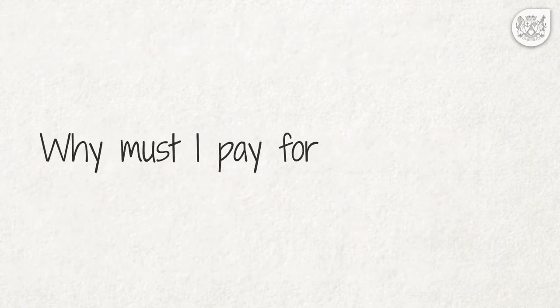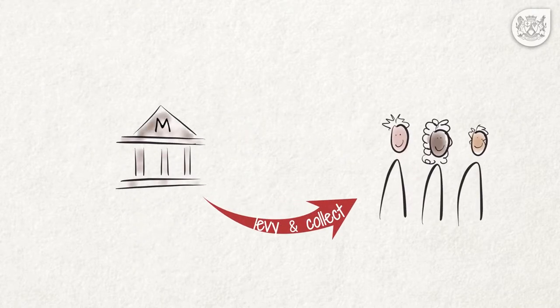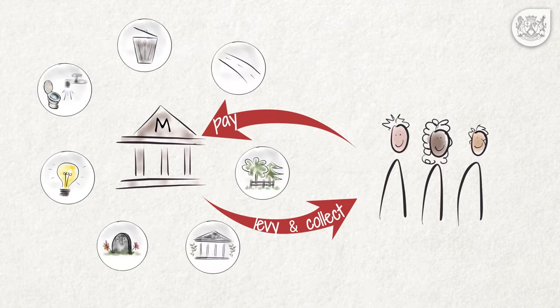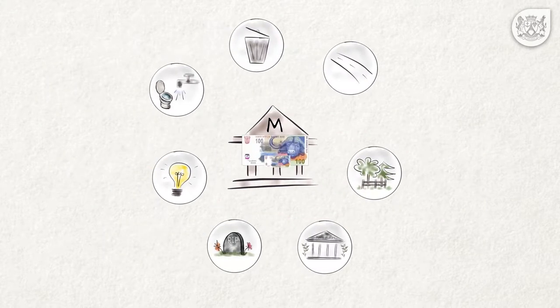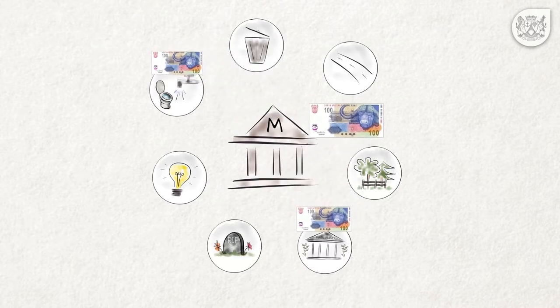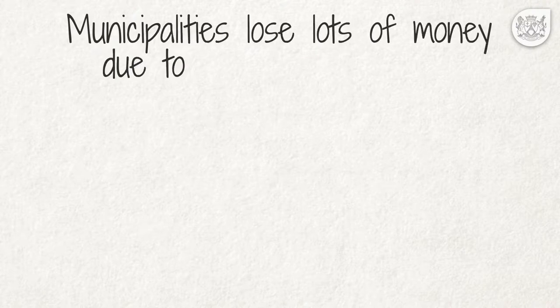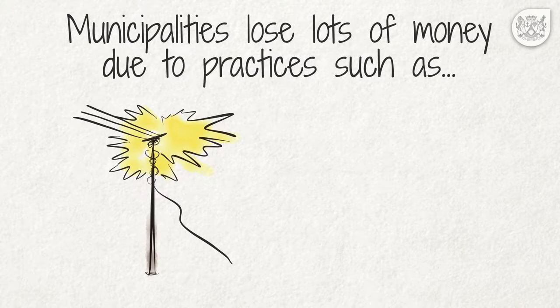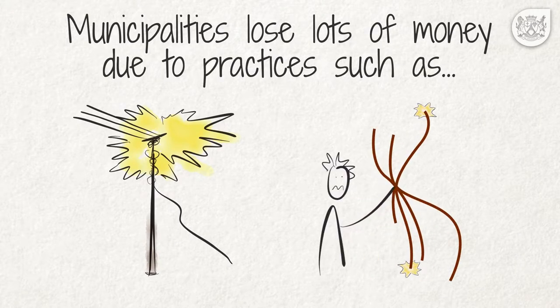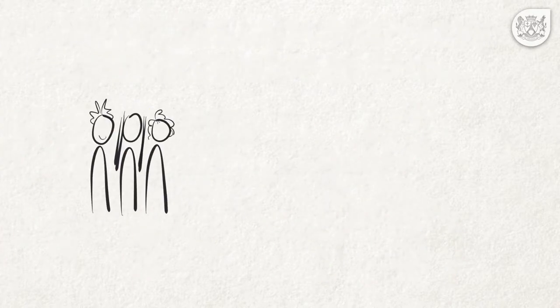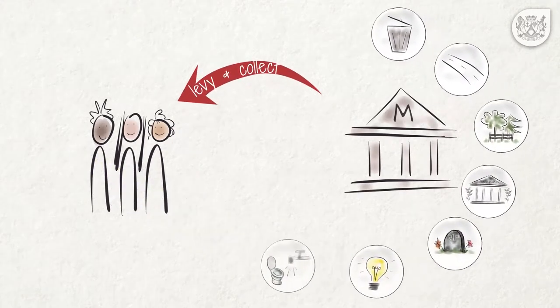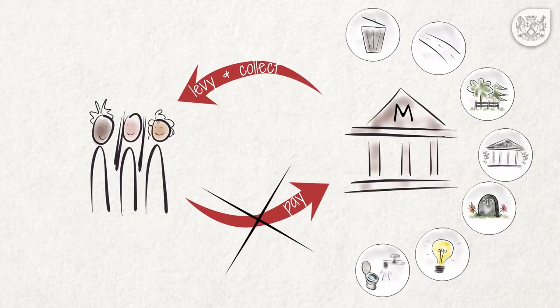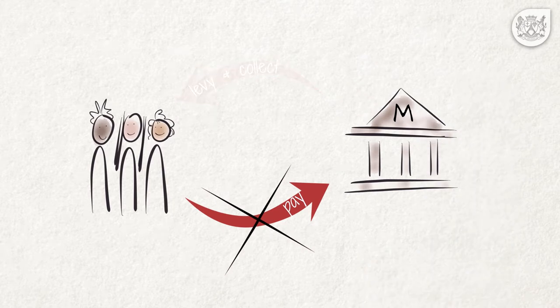Why must I pay for the services? Municipalities rely on user charges to get the money necessary to provide services to the people. Each service costs substantial amounts of money to set up and to maintain. Municipalities lose lots of money due to practices such as illegal electricity connections or theft of cables, and this affects their ability to pay for the services that they provide. If users who do not qualify for free services don't pay, municipalities don't have the resources to continue to provide the services.